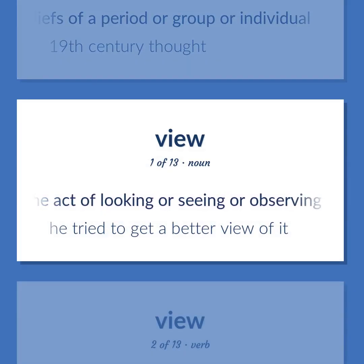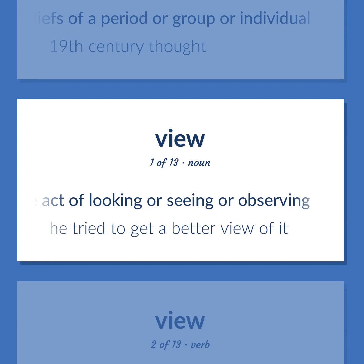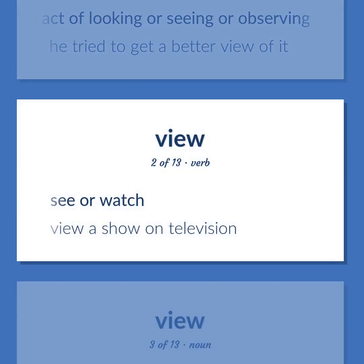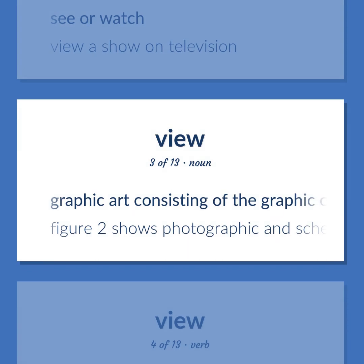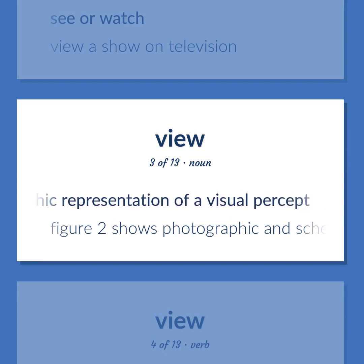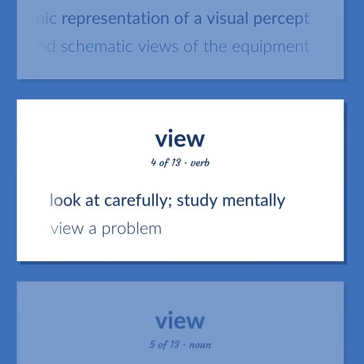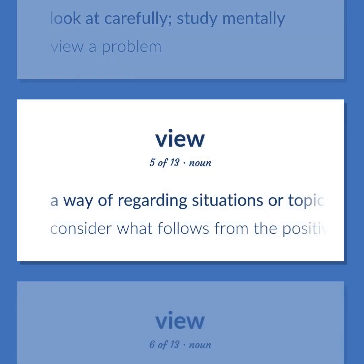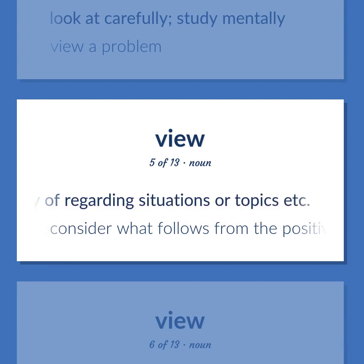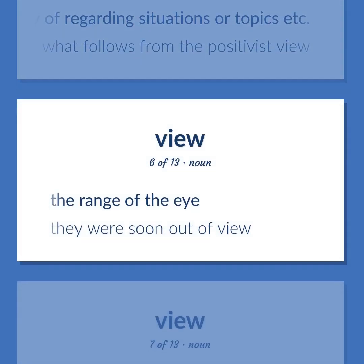'View': The act of looking, seeing, or observing. Example: 'He tried to get a better view of it.' To see or watch — 'View a show on television.' Graphic art consisting of a graphic or photographic representation of a visual percept. Example: 'Figure 2 shows photographic and schematic views of the equipment.' To look carefully; study mentally — 'View a problem.' A way of regarding situations or topics. Example: 'Consider what follows from the positivist view.' The range of the eye — 'They were soon out of view.'